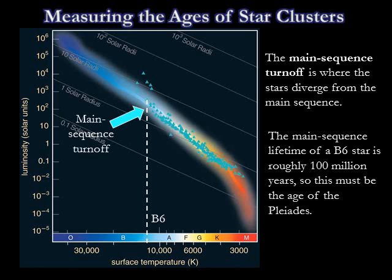Over the next few billion years, the B stars in the Pleiades will die out, followed by the A stars and the F stars. If we could make an HR diagram for the Pleiades every few million years, we would find its main sequence gradually growing shorter.